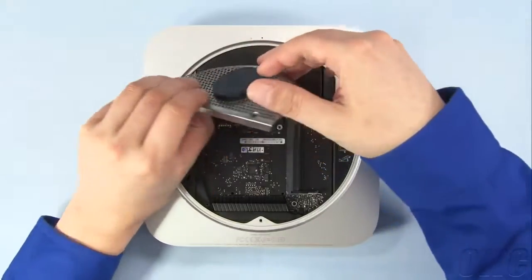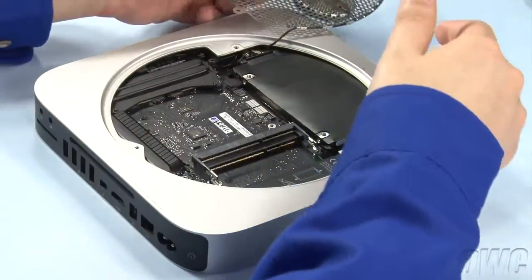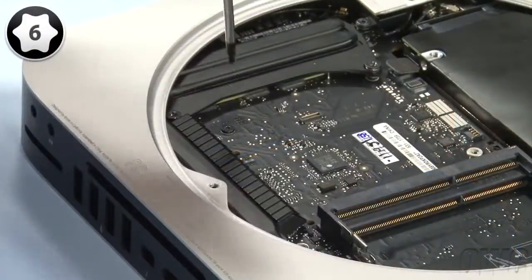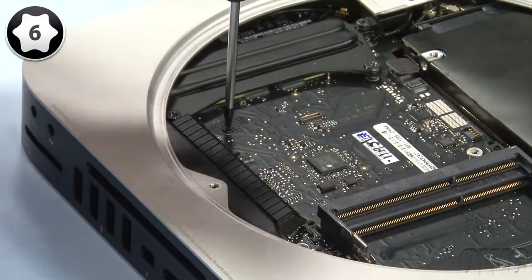If the airport cable comes loose, that's okay. You can reattach it later. Otherwise, it can just sit there. Remove this final screw with your Torx T6 screwdriver.